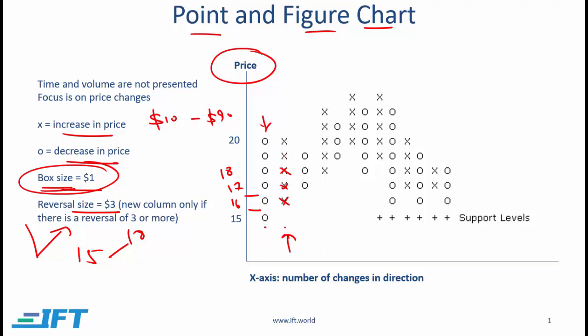Notice that when we go from one column to another, we add the first X over here. In this case, since the reversal was $3, we add this X as well as two more X's. Then we get up to $20 and this might take several days. After that, let's say there's another reversal. From $20, we come down by $3 to $17.